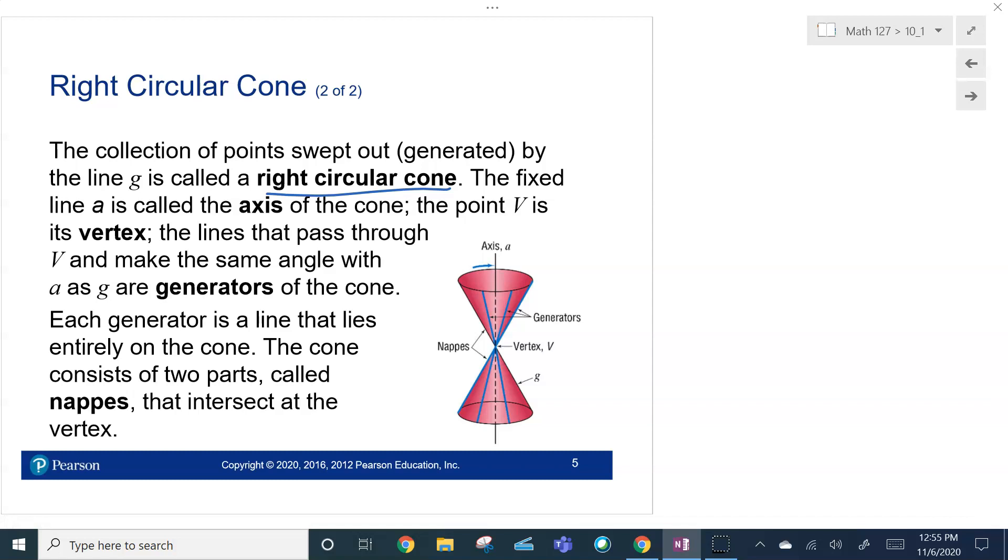Again, the fixed lines are the axis. We've got our vertex here right in the middle. We have our generators, right? That line A. And all those lines are called generators of the cone. And then these are the nappes. There's a nappe right there. They intersect at the vertex.